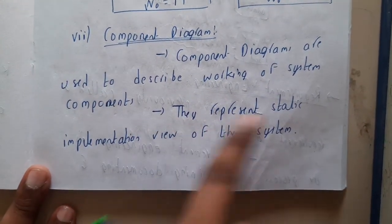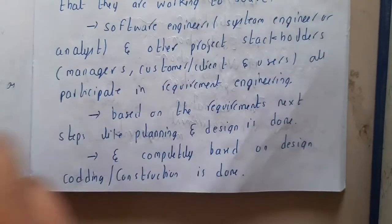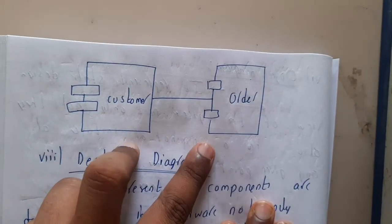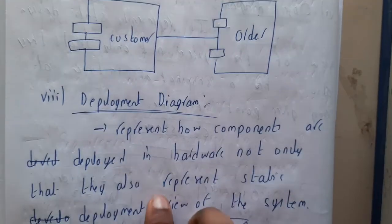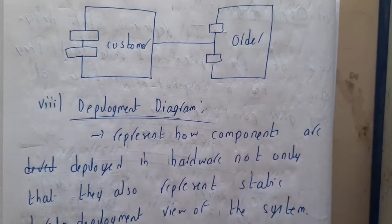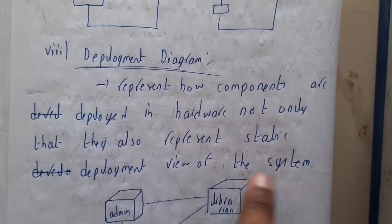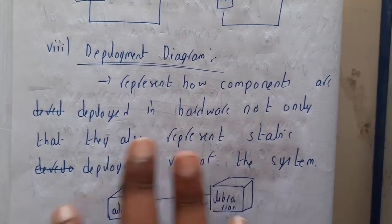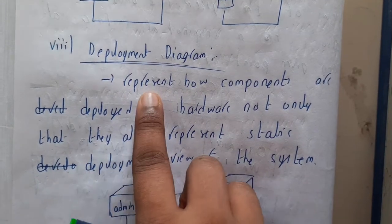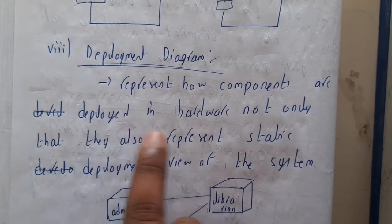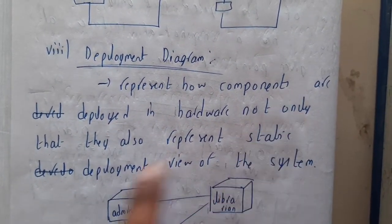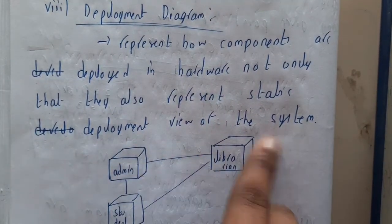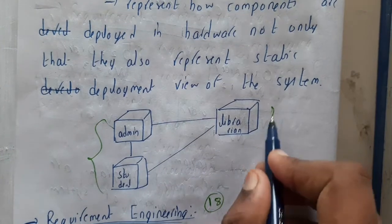Component diagrams are used to describe the work of system components and represent the static implementation view of the system — showing the relationships between components, such as a Customer belonging to an Order. Deployment diagrams are the last type, representing how components are deployed on hardware, showing the static deployment view of the system.